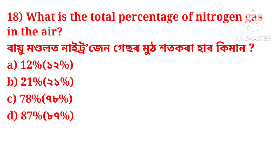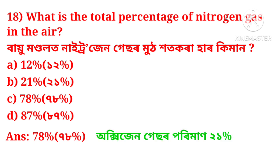What is the total percentage of nitrogen gas in the air? The options are: 12%, 21%, 78%, or 87%. The correct answer is 78%. Note that the percentage of oxygen in the atmosphere is 21%.